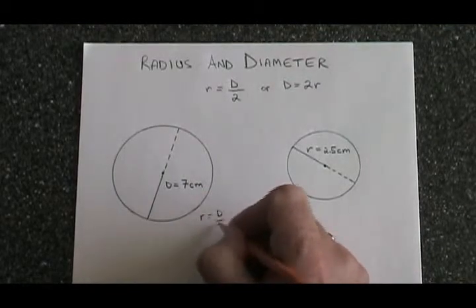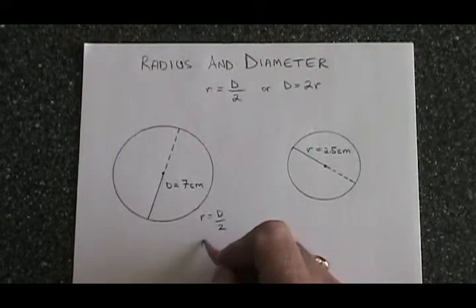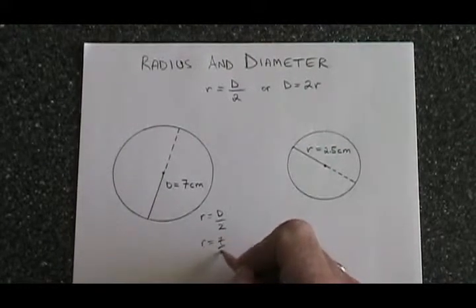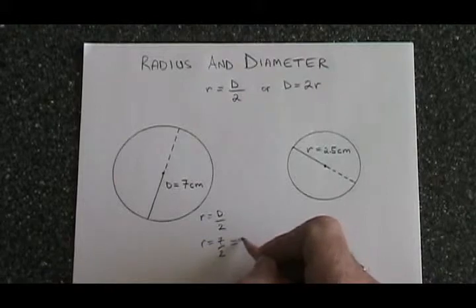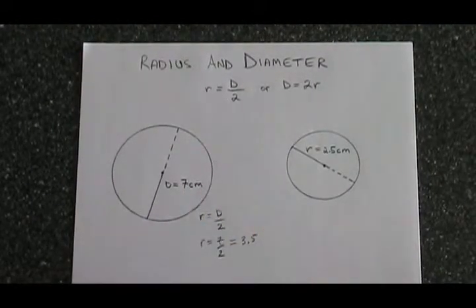R equals D over 2. Plugging in the 7 cm, we have R equals 7 over 2, which means R is equal to 3.5. The radius of this circle is 3.5 cm.